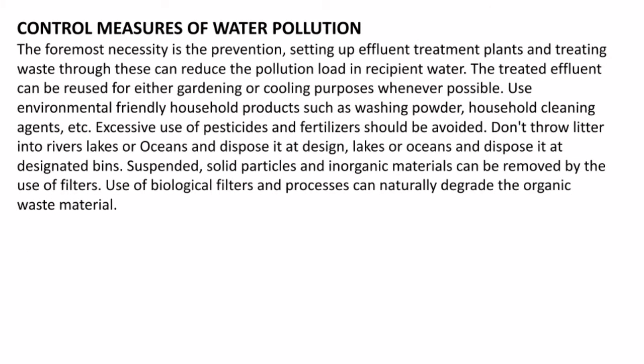Control measures for water pollution include setting up effluent treatment plants to reduce the pollution load before discharge. Treated effluent can be reused for gardening or cooling purposes. Use environmentally friendly household products such as washing powder and cleaning agents. Avoid excessive use of pesticides and fertilizers. Do not throw litter into rivers, lakes, or oceans — dispose of it at designated bins. Suspended solid particles or inorganic materials can be removed using biological filters and processes to naturally degrade organic waste.